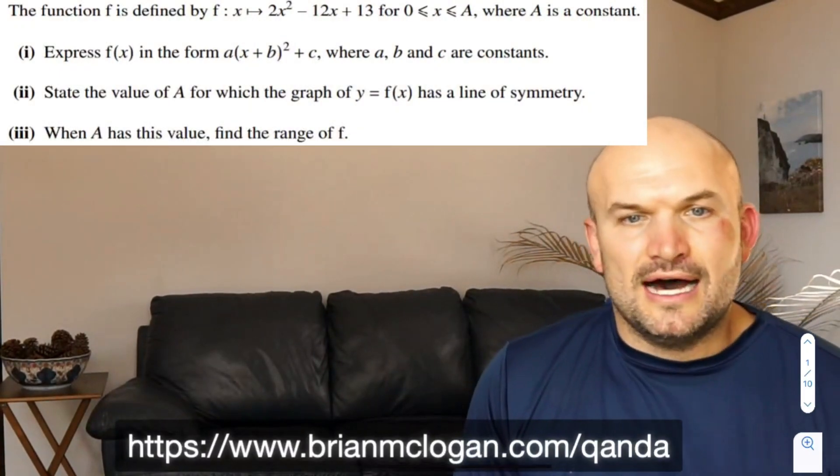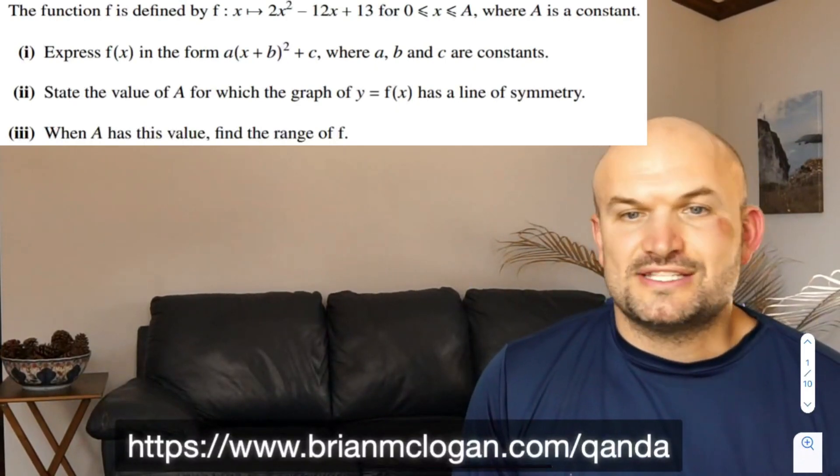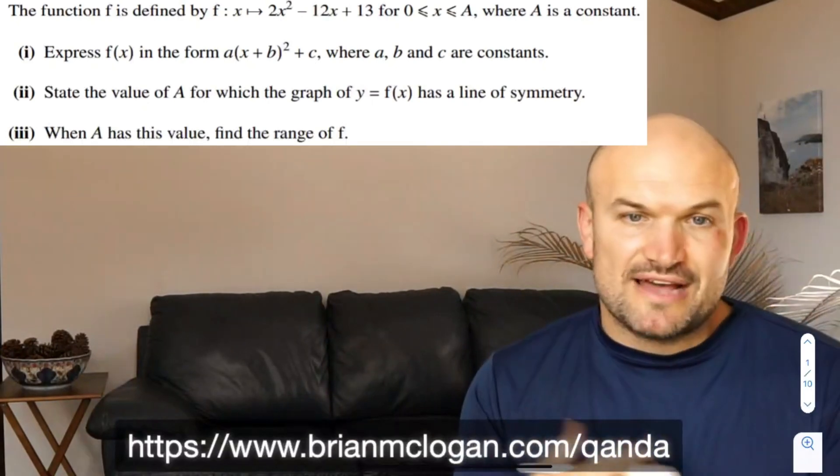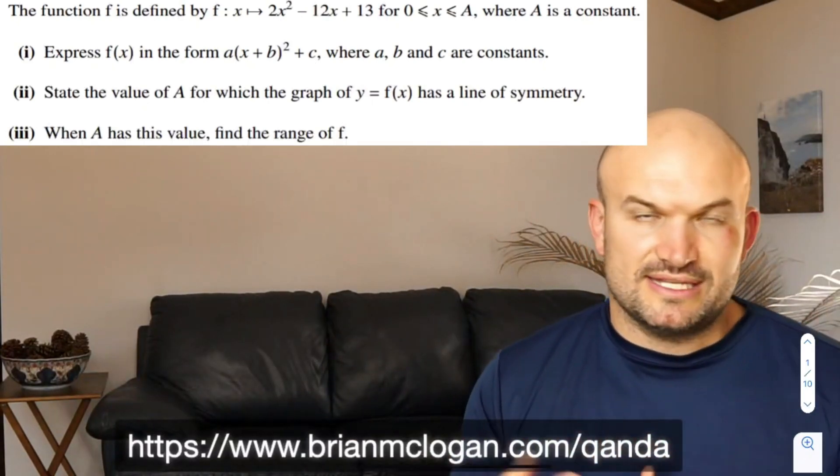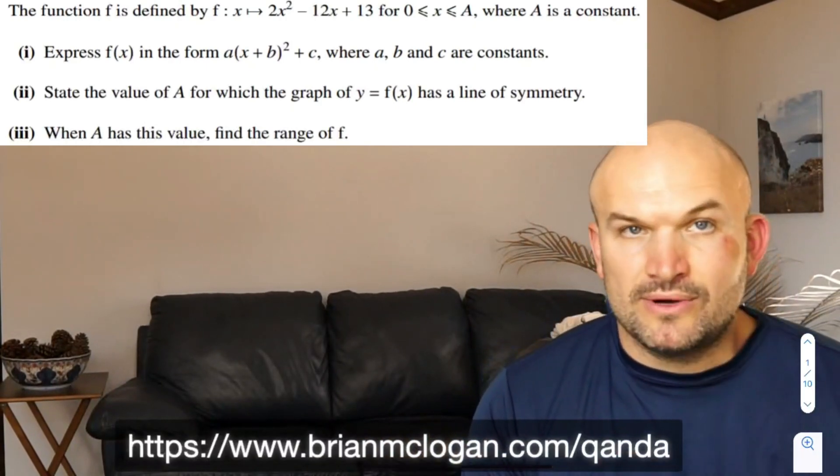This one says the function f is defined as 2x squared minus 12x plus 13 for 0 is less than or equal to x, which is less than or equal to A, where A represents some constant. Express f of x in the form a times (x plus b) squared plus c. So that's going to be our vertex form. Let's go ahead and work on that one first.